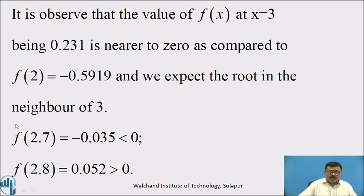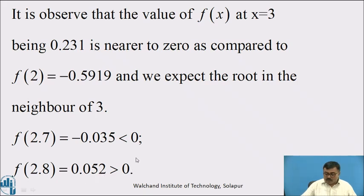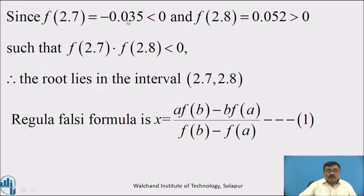To find the closer interval, substitute values between 2 and 3: f(2.1), f(2.2), f(2.3), and so on. f(2.7) = −0.035, which is less than 0, and f(2.8) = 0.052, which is greater than 0. Since f(2.7)·f(2.8) < 0, the root lies in the interval (2.7, 2.8). The Regula Falsi formula is x = [a·f(b) − b·f(a)] / [f(b) − f(a)] — call it equation 1.